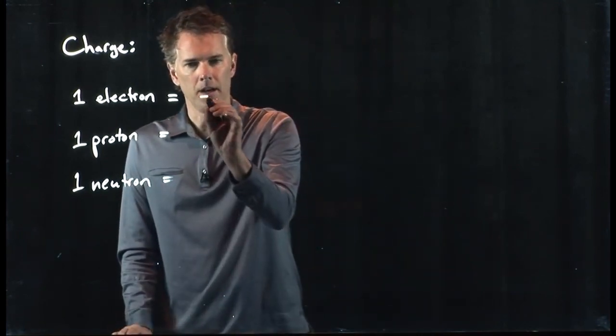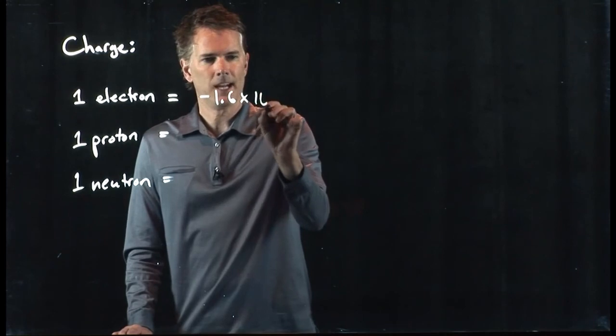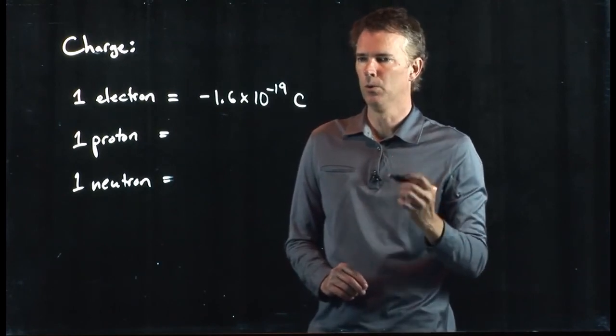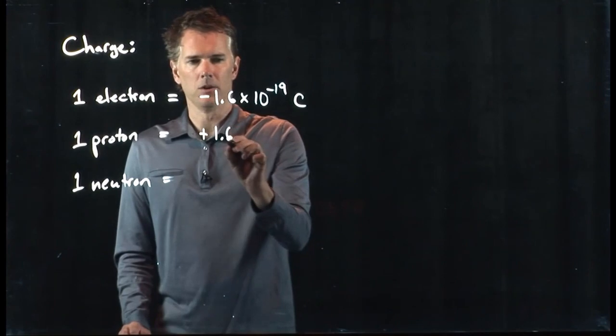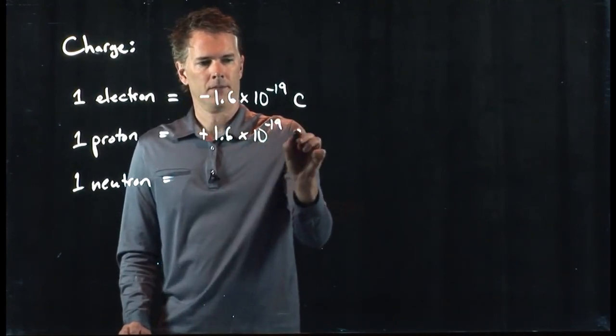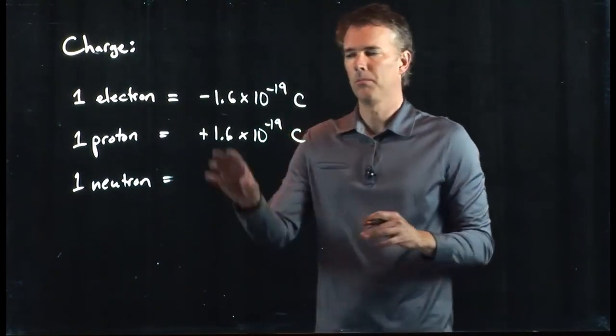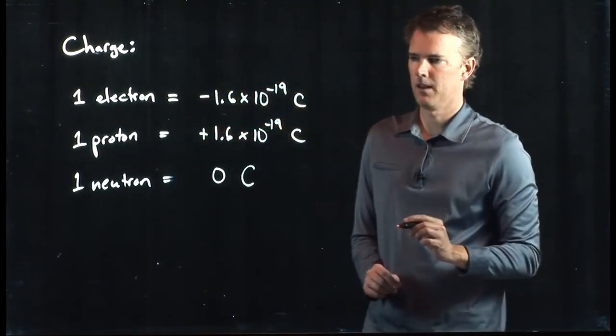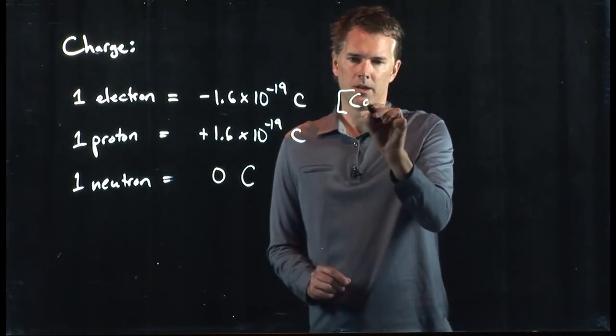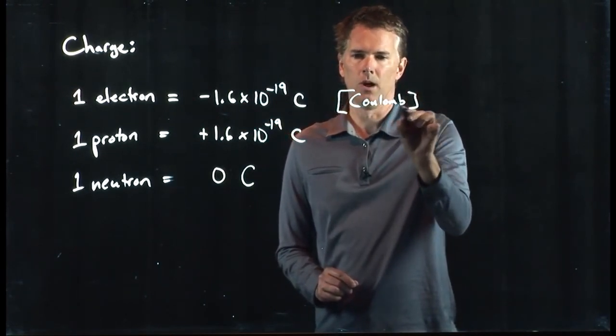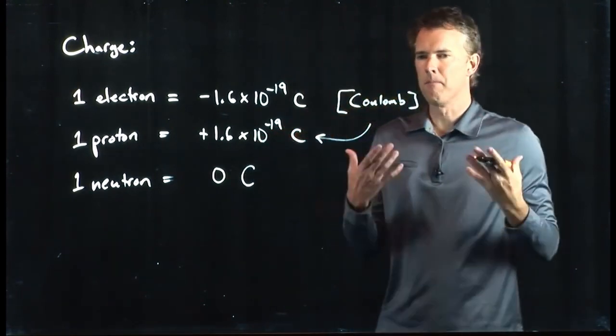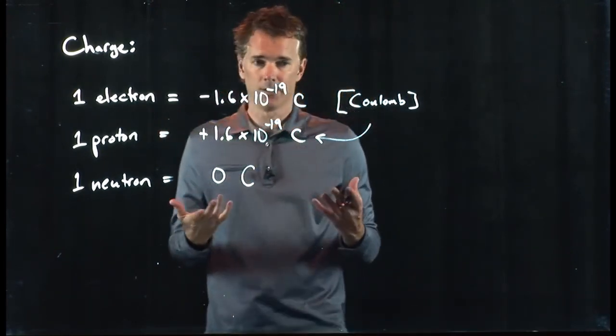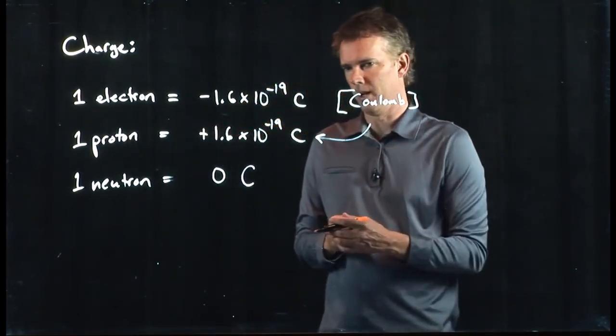So one electron has a charge of negative 1.6 times 10 to the minus 19 coulombs. That's what this capital C is. It's a coulomb. A proton has exactly equal and opposite, 1.6 times 10 to the minus 19 coulombs, positive. One neutron has a charge of zero. And this thing right here, the capital C, that is called a coulomb. And that's a measure of charge. So one electron is a pretty small amount of coulombs. But we have a lot of electrons floating around. We've got a lot of electrons. We have a lot of protons floating around.